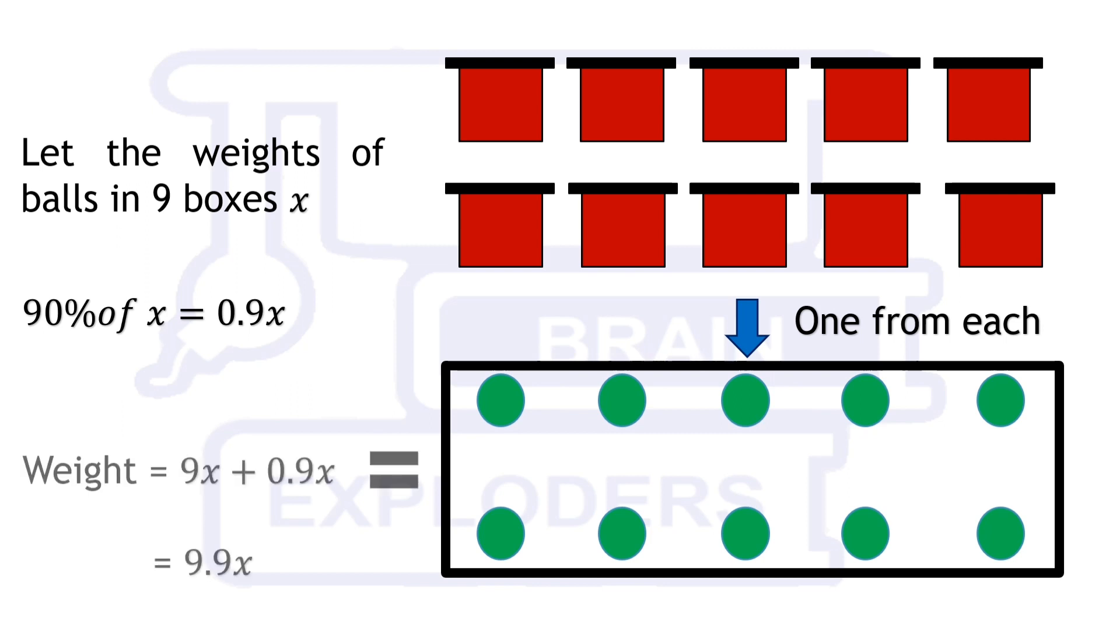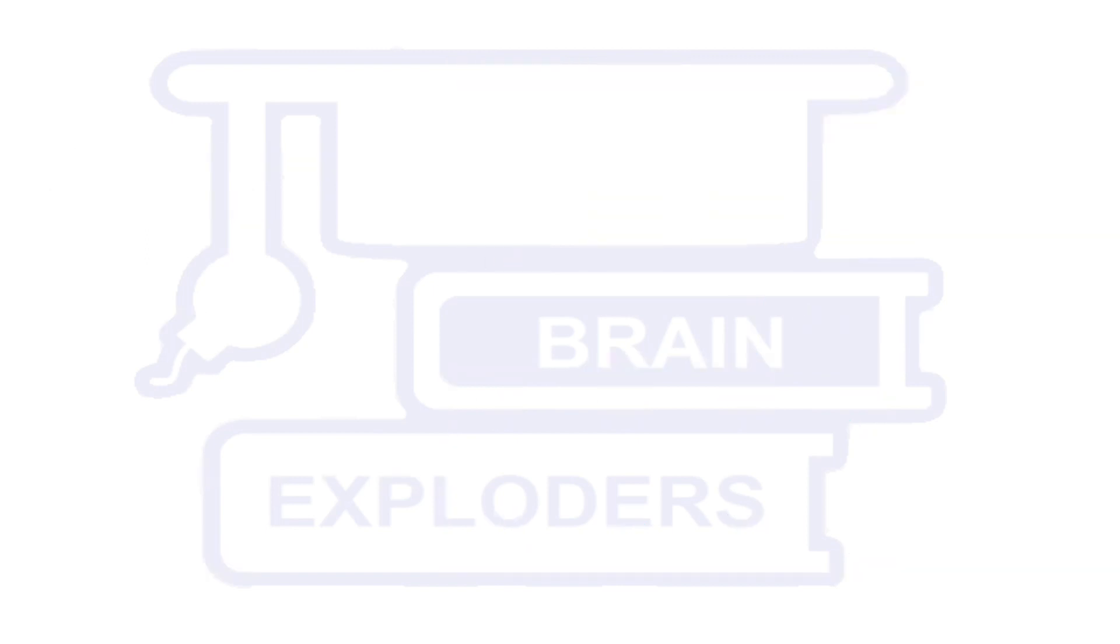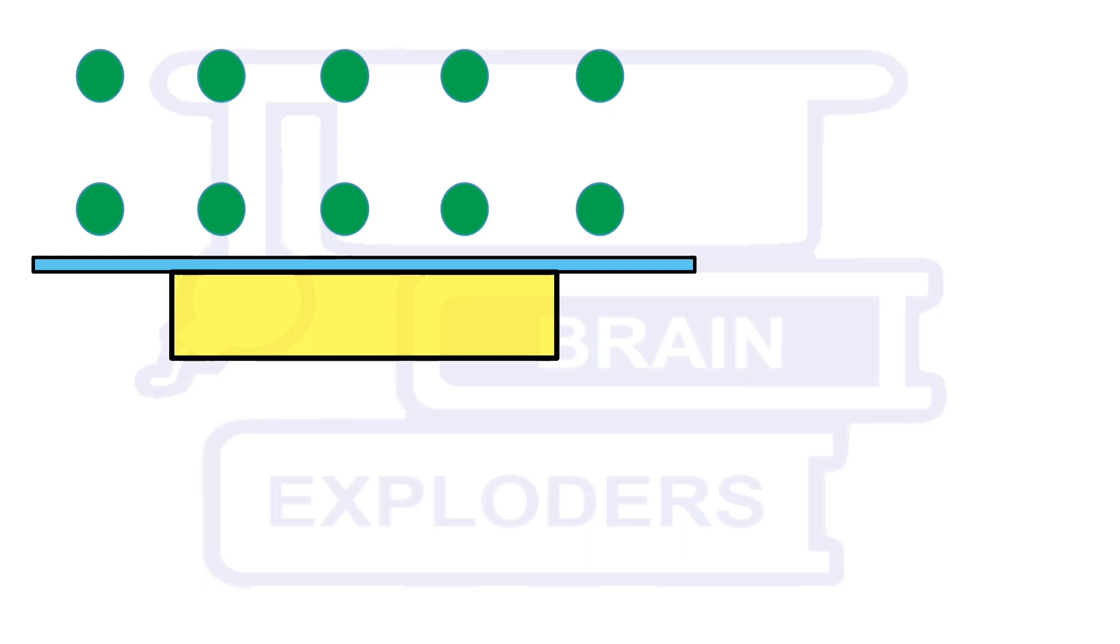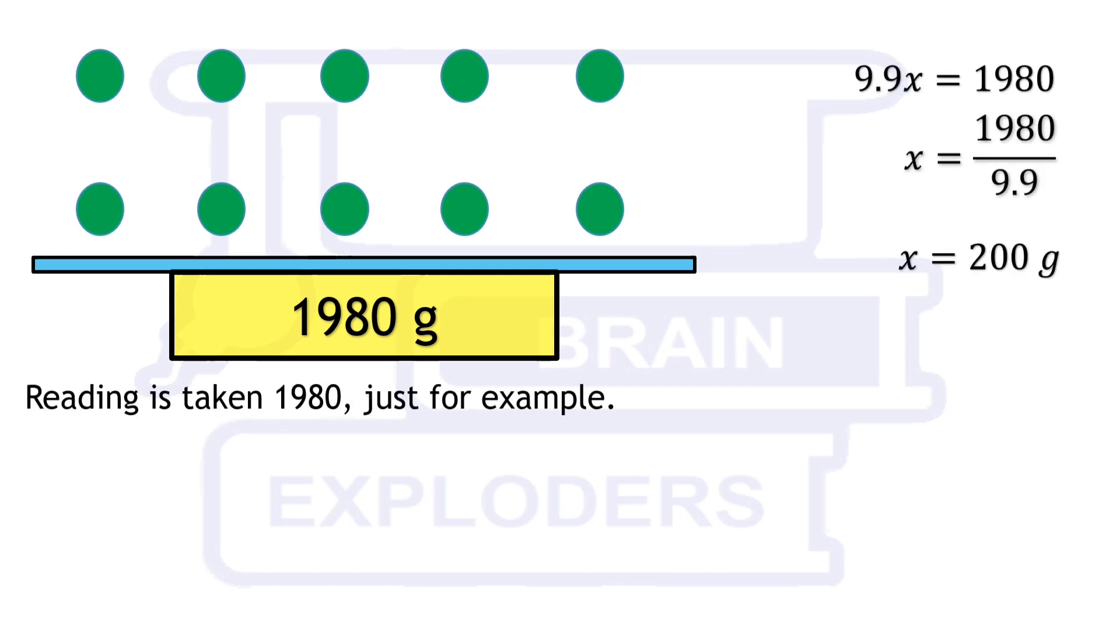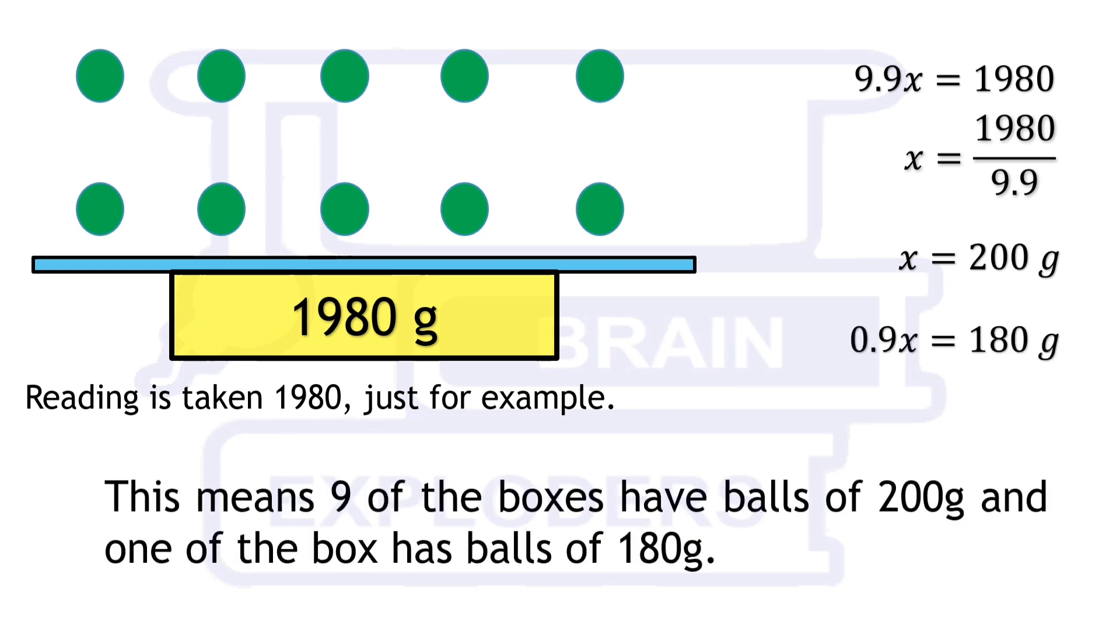So the total weight of these balls is equal to 9x plus 0.9x. Now put all these balls together on the weighing machine. The weighing machine can show any weight. Just for example, let's take the weighing machine shows 1980 grams. Now put 9.9x equals to 1980 grams and 0.9x equals to 180 grams. This means 9 of the boxes have balls of 200 grams and 1 of the box has balls of 180 grams.